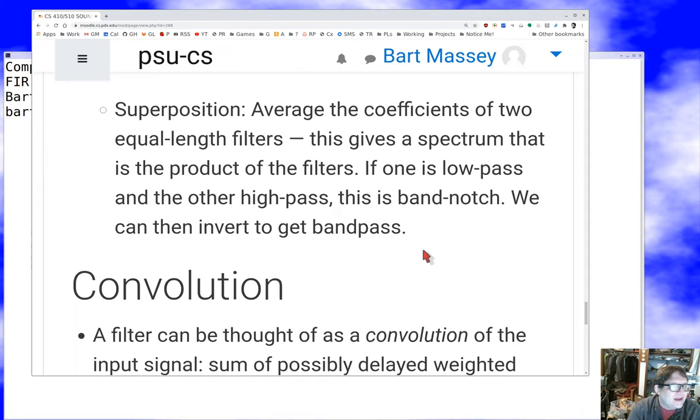If I take my coefficients and turn them around so that the one that was closest to the present is now farthest in the past, that turns my low-pass filter into a high-pass filter. Then there's superposition. If we take two equal-length filters and average their coefficients, that gives you a spectrum that's the product of the filters.